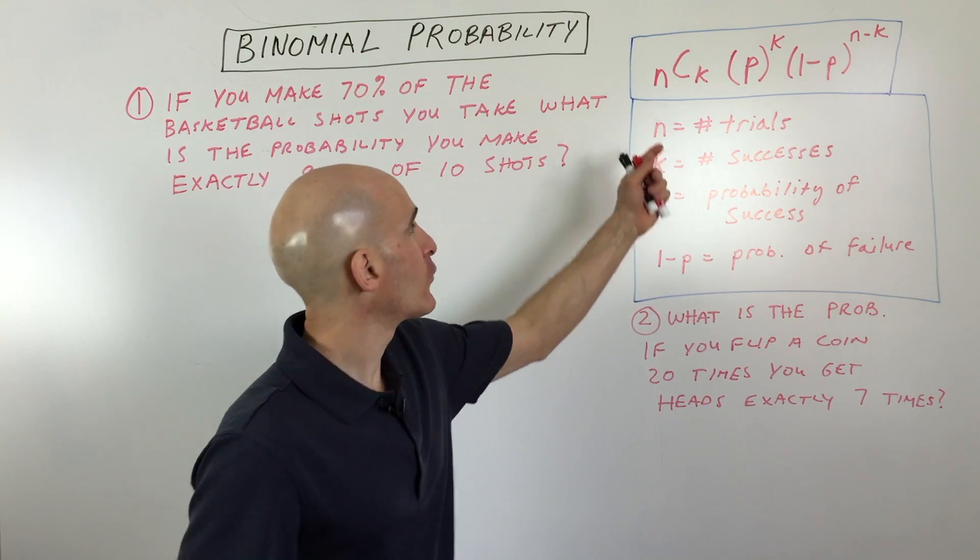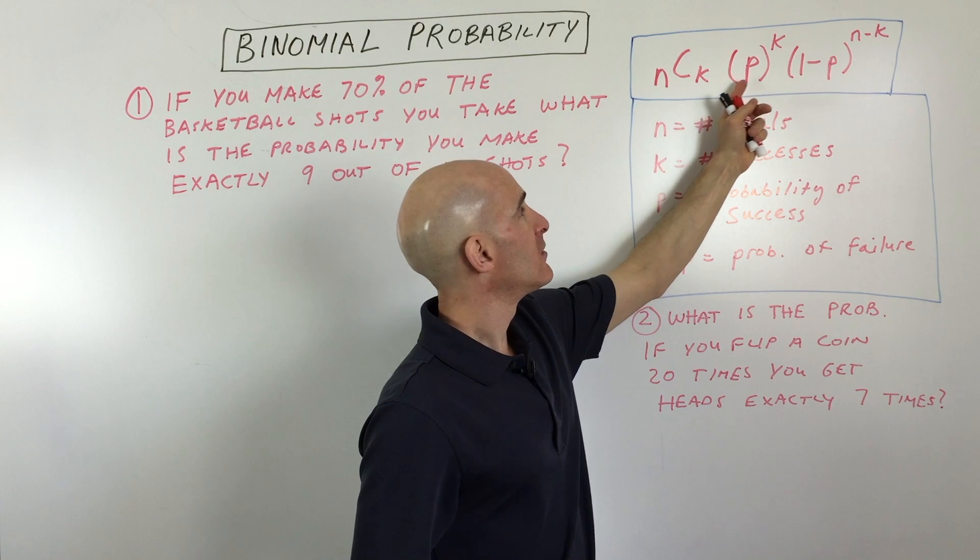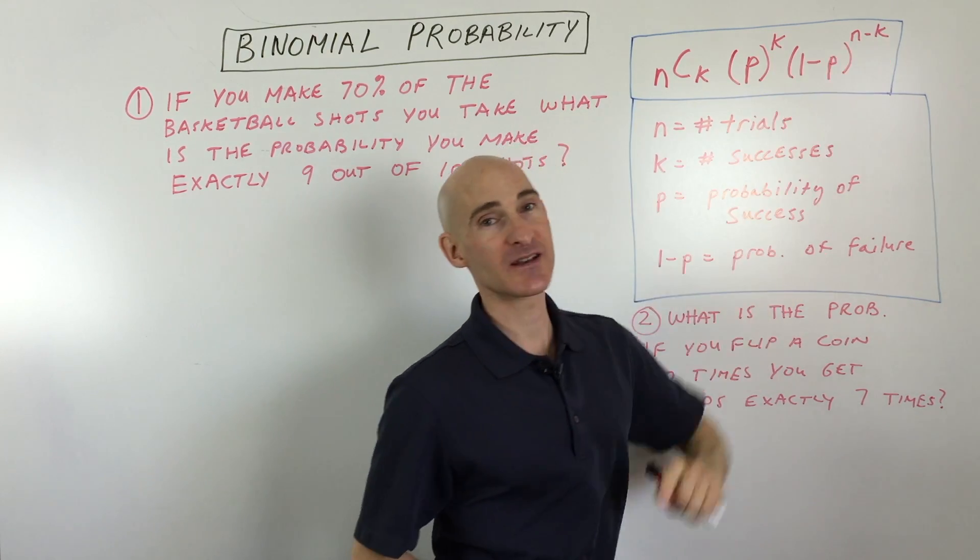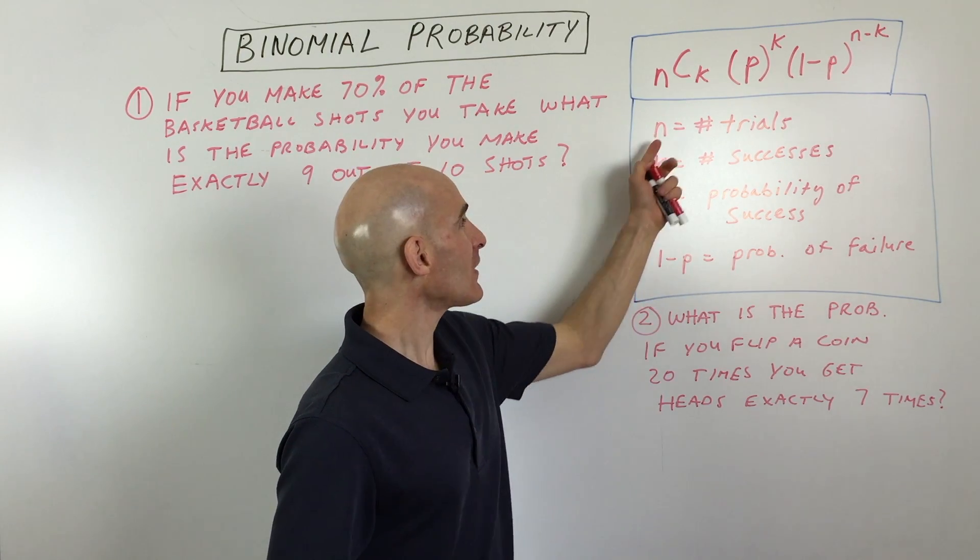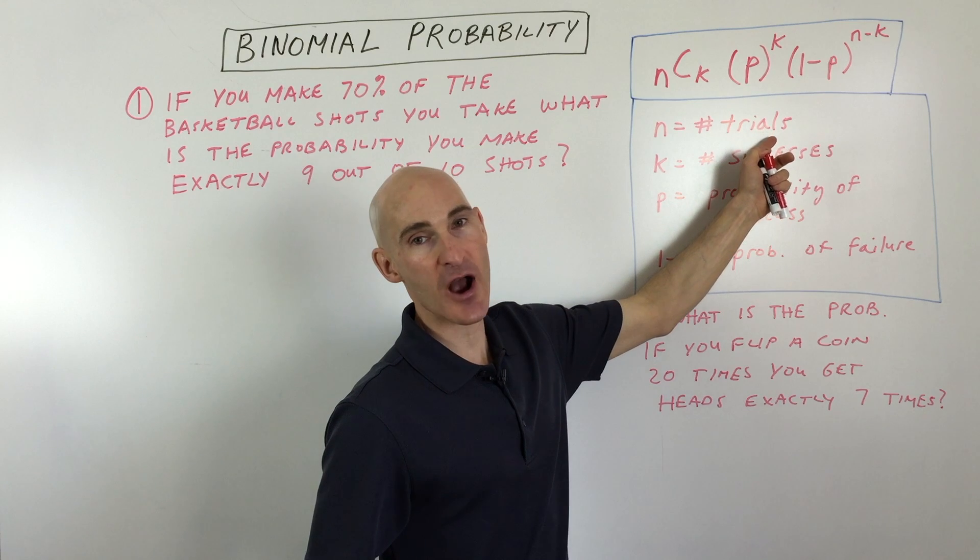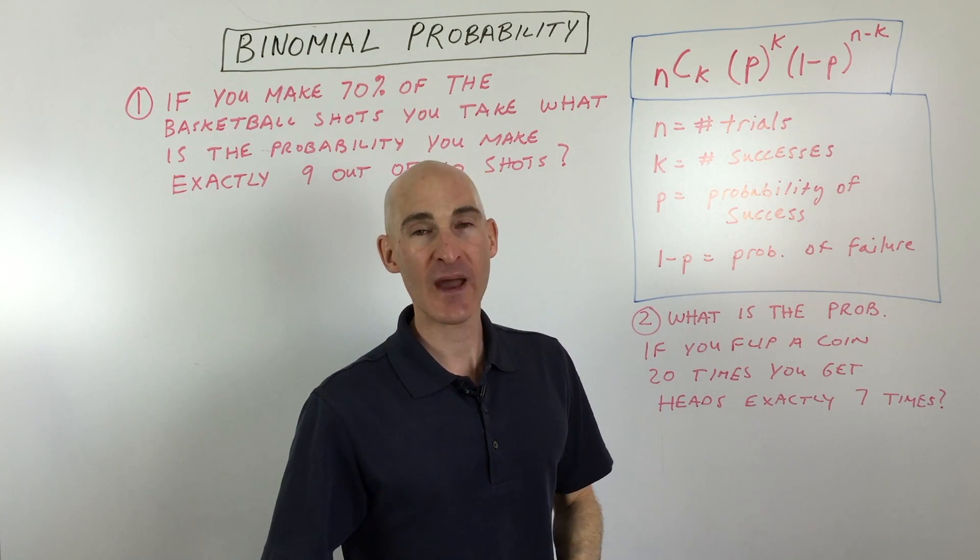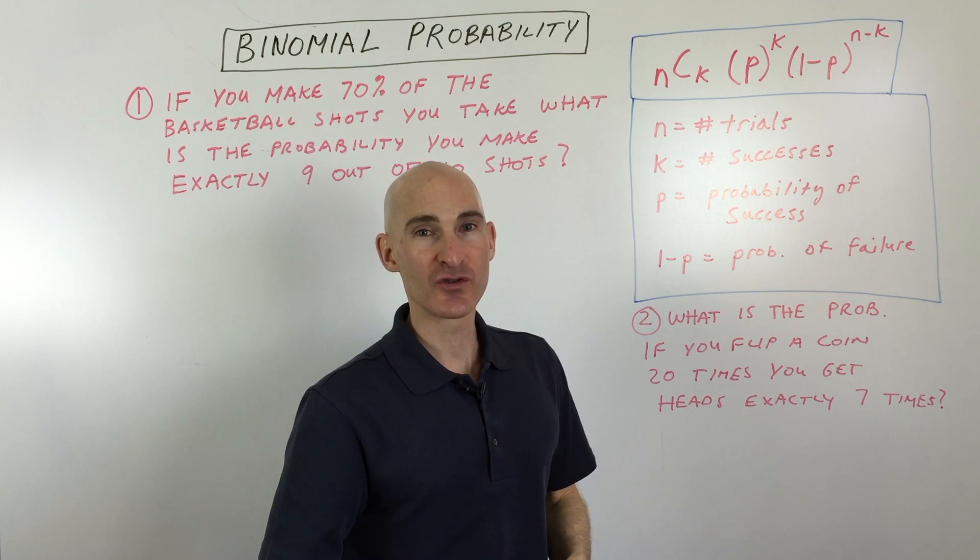So if we take a look at the formula here, we've got n choose k, p to the k times 1 minus p to the n minus k. So what do all these variables represent? Well, n represents the number of trials, the number of times you flip a coin, or number of basket shots that you take, or whatever it is that you're working with.